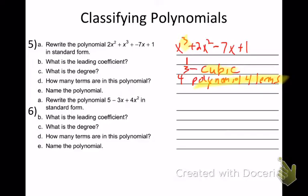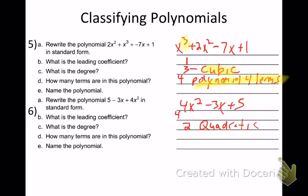Number six — write it in standard form. Leading coefficient is four. What's the degree? Two — quadratic. How many terms? Three — trinomial. So the name would be a quadratic trinomial.